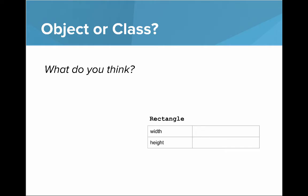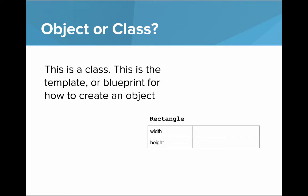What about this? Here we have a template. This is a template for us to create rectangles. What is it? This is a class. This is the template or a blueprint for how to create an object.